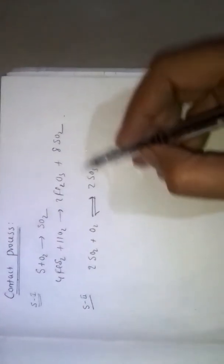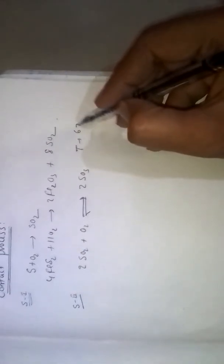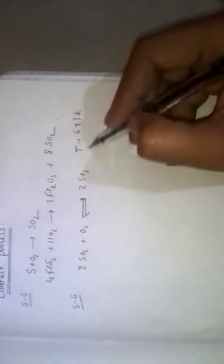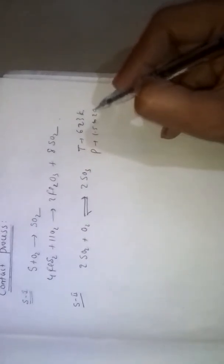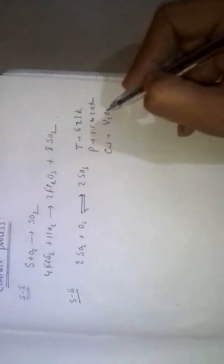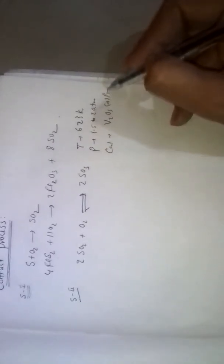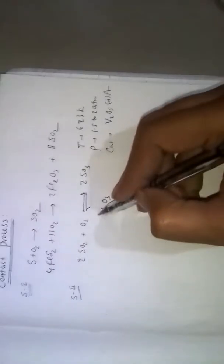Those optimum conditions are given by Le Chatelier's principle. Here temperature used is 623 Kelvin and pressure used is 1.5 to 2 atm. Catalyst used is V2O5 or platinum catalyst. Arsenic oxide acts as a poison in this process.